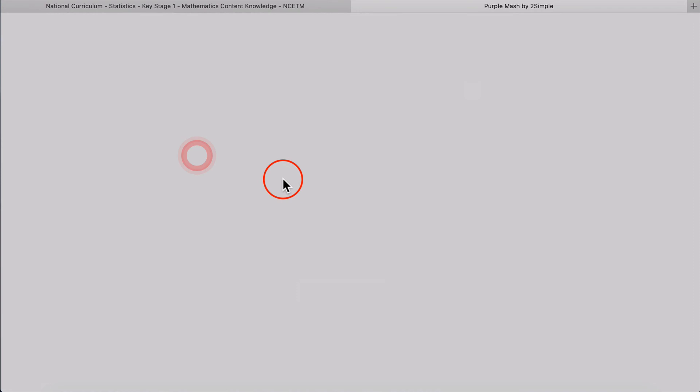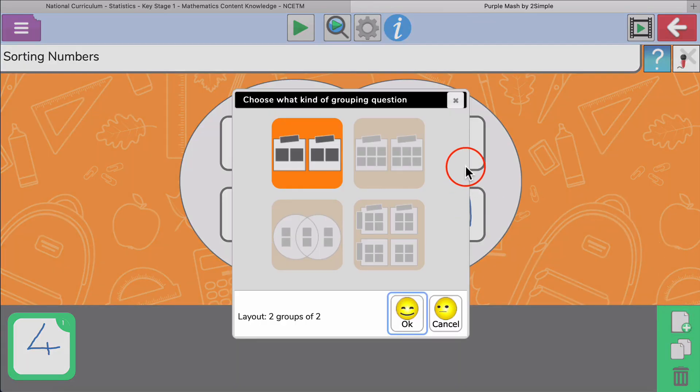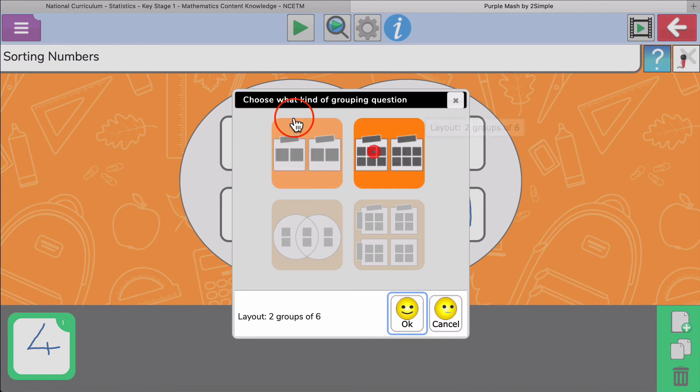Just going back into one of these, I just want to show you in here I've got other options apart from Venn diagrams. I can set up Carroll diagrams as well where I've got four groups of four here or other ways of sorting into categories. So it's not just Venn diagrams that I can do.